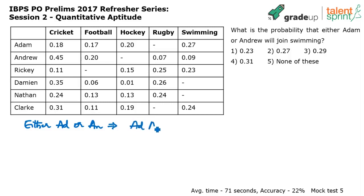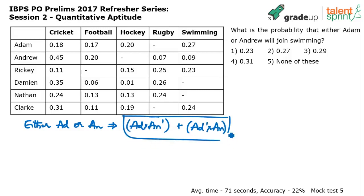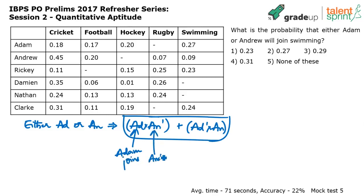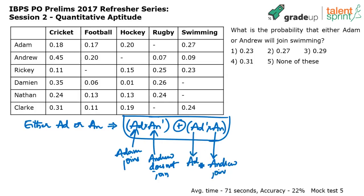There are two cases: if Adam joins, then Andrew should not join; or if Andrew joins, then Adam should not join. Using notation where 'dash' means 'not joining': the answer equals P(Adam joins) × P(Andrew does not join) + P(Andrew joins) × P(Adam does not join).